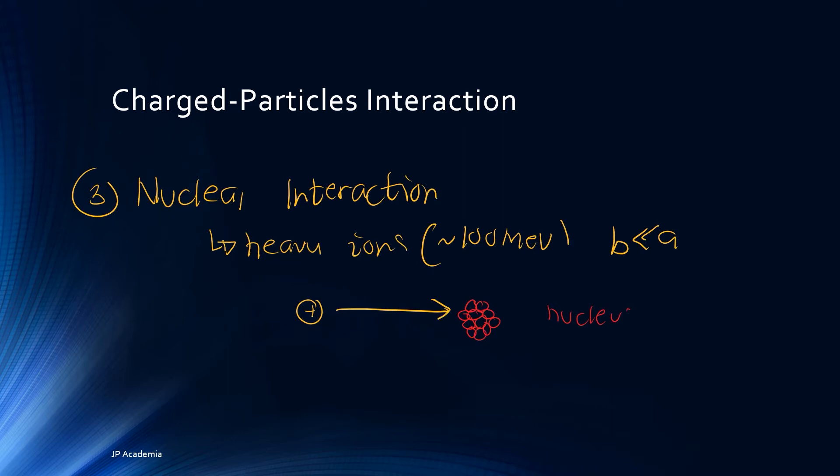We have nuclear interactions. For a heavy charged particle with kinetic energy of about 100 mega electron volts and with an impact parameter less than the nuclear radius, charged particles may interact inelastically with the nucleus. It is possible to remove one or more nucleons as well in this interaction.